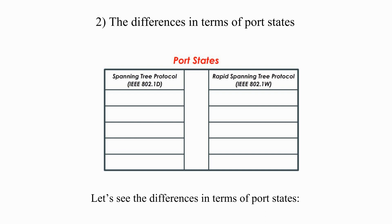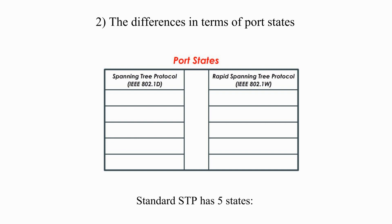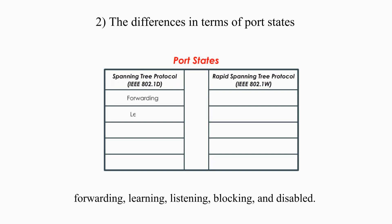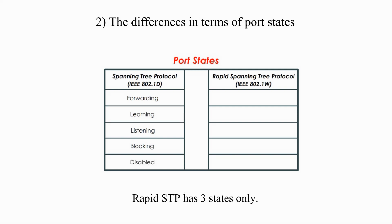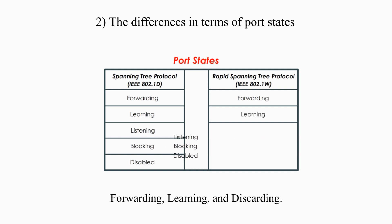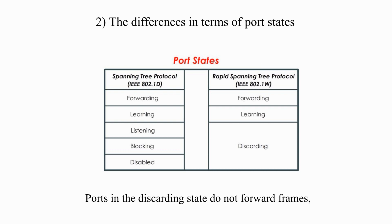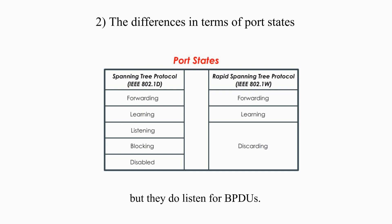Let's see the differences in terms of port states. Standard Spanning Tree Protocol has five states: forwarding, learning, listening, blocking, and disabled. Rapid Spanning Tree Protocol has three states only: forwarding, learning, and discarding. Ports in the discarding state do not forward frames, do not process frames, but they do listen for BPDUs.